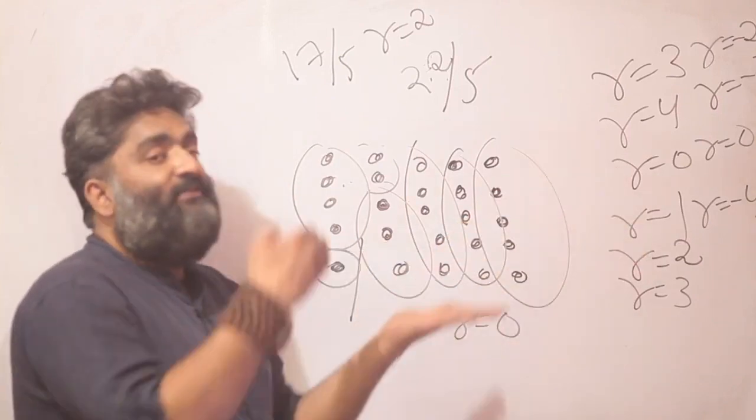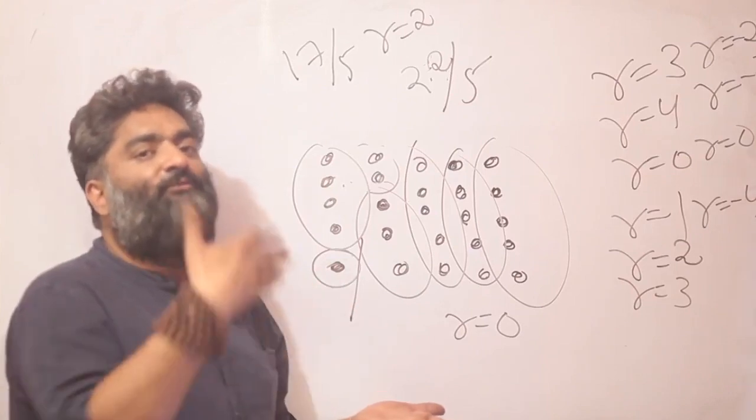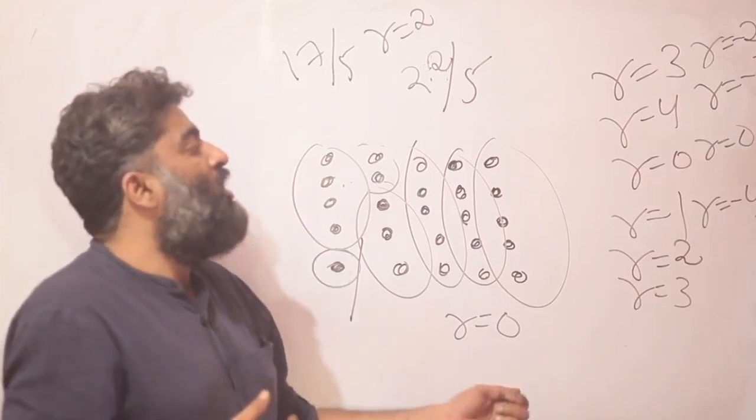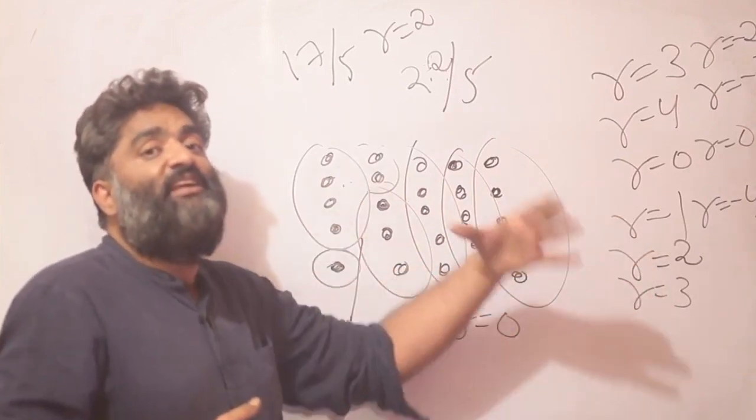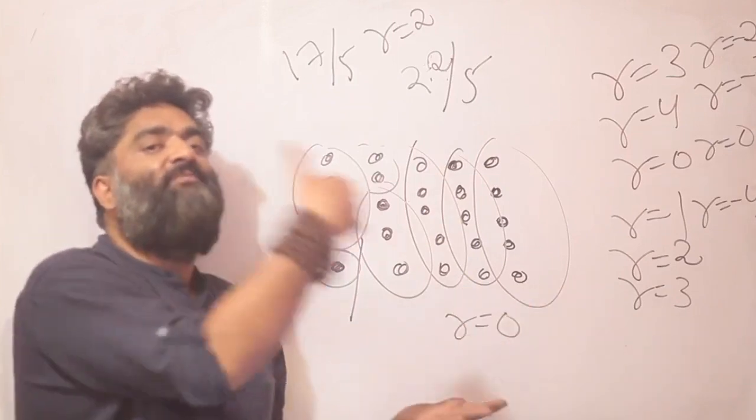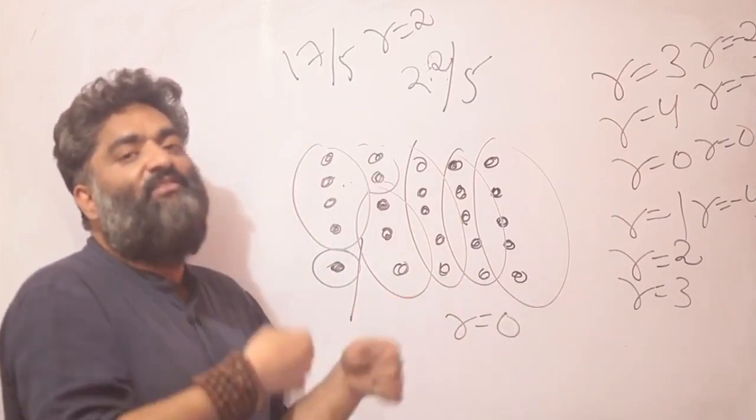And if we are any number that we will think of in terms of 5, either it will be a multiple of 5 or it will be 1 ahead or 2 ahead or 3 ahead or 4 ahead. Once it again reaches 5 ahead, it will again become a multiple of 5. So the idea of cyclicality once again will kick in here.